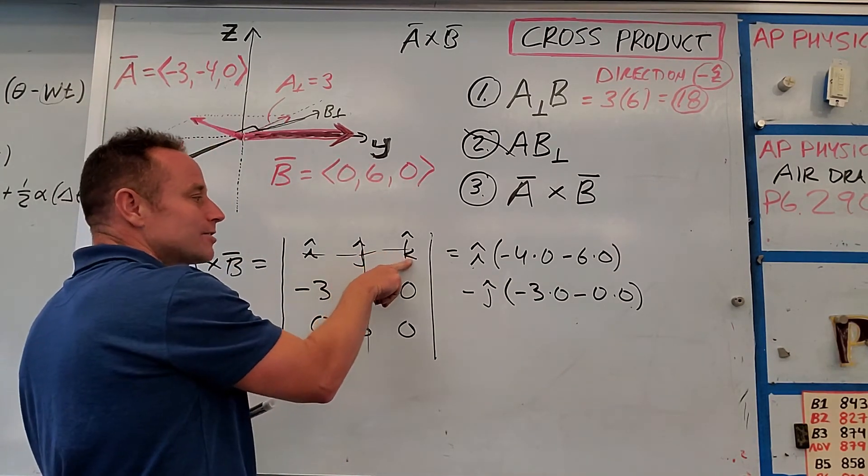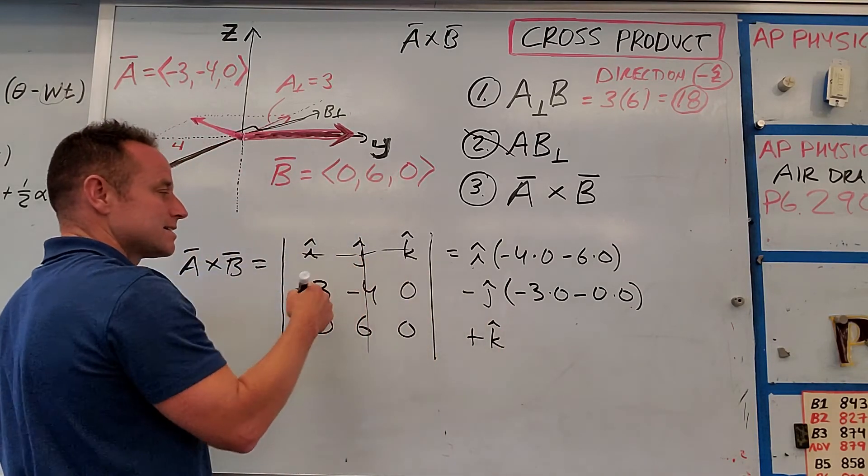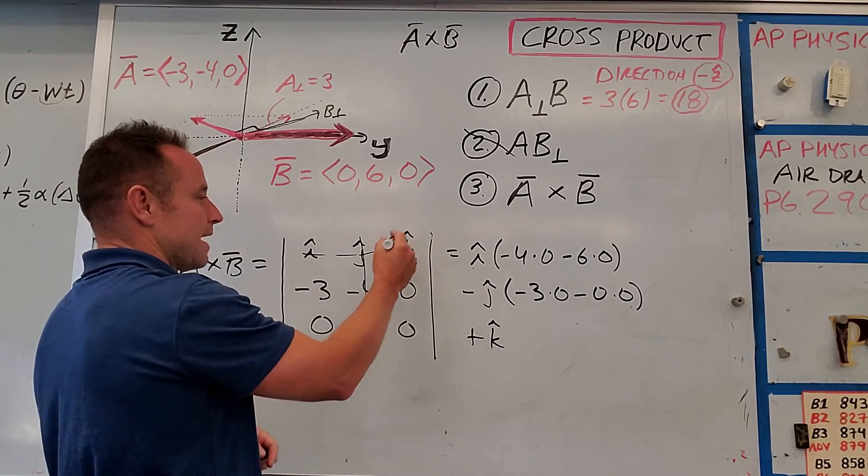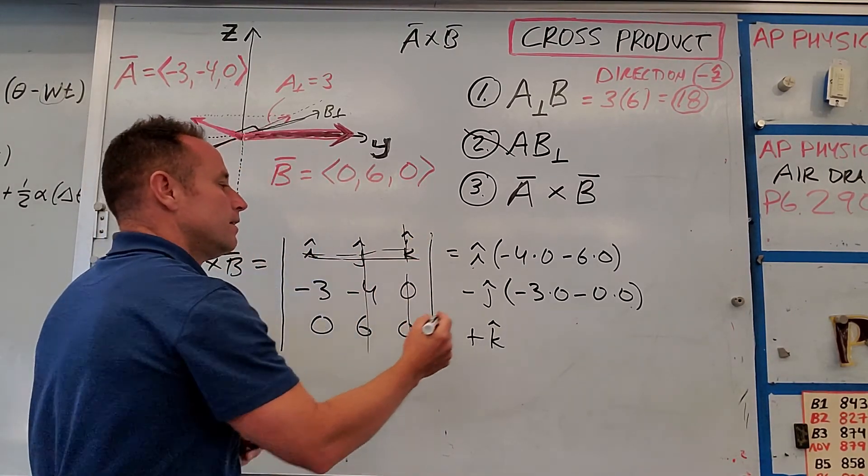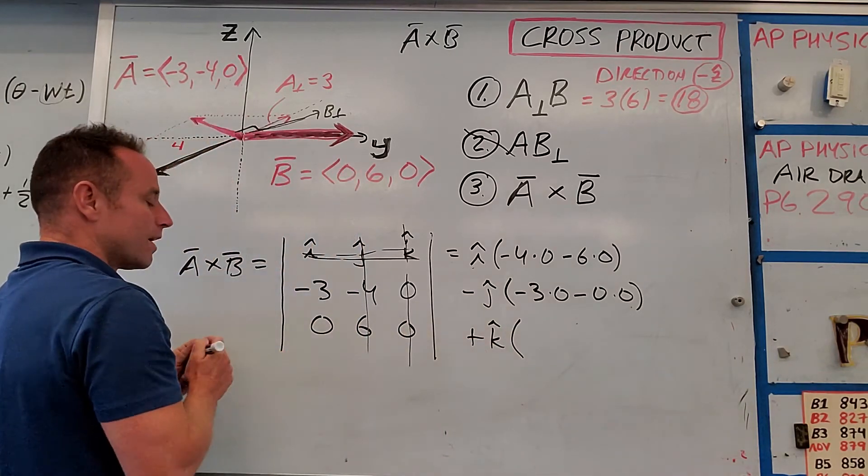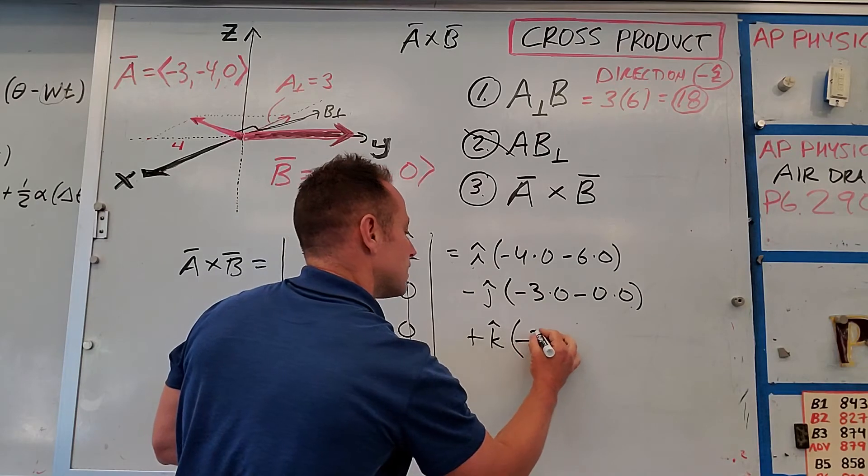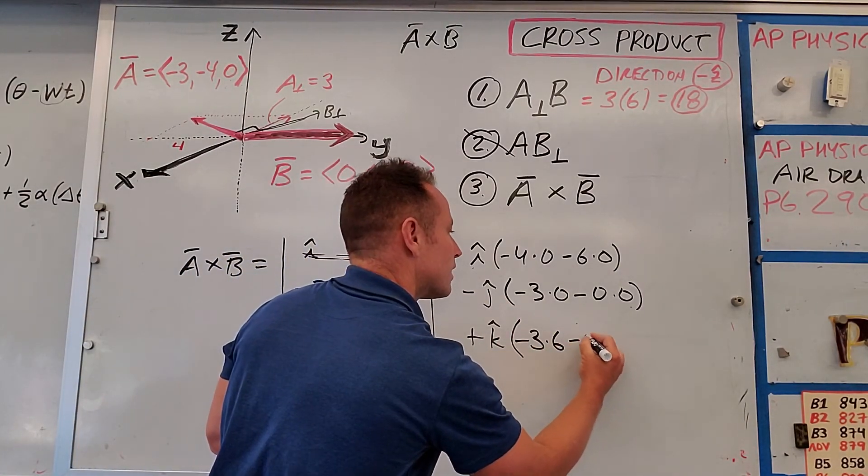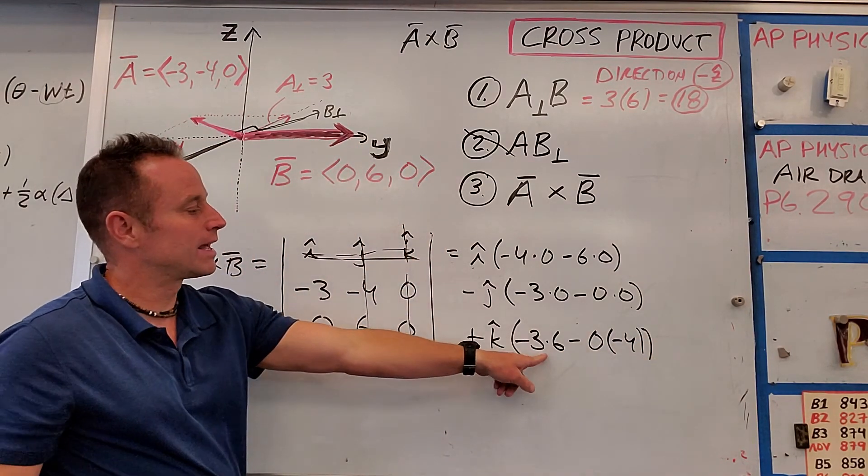So now finally we are to the K hat direction. So you say plus K hat. You oscillate signs. Plus, minus, plus. And now we're going to expand this guy by minor. So cross that column in that row. And let's go for it. So you have negative 3 times 6 minus 0 times negative 4.